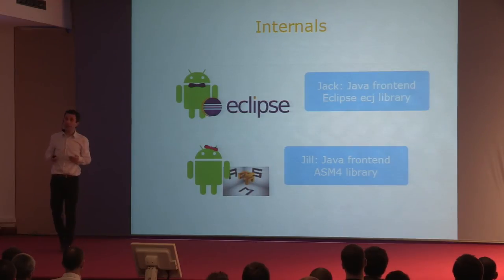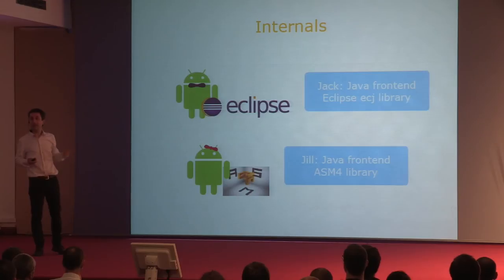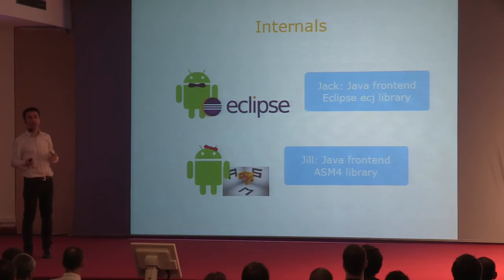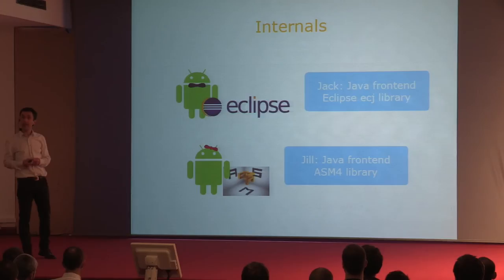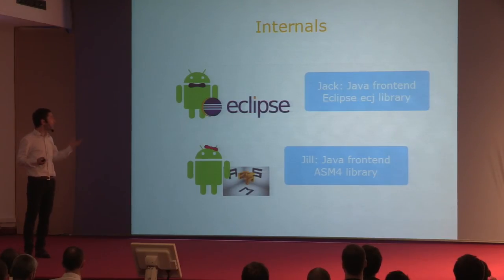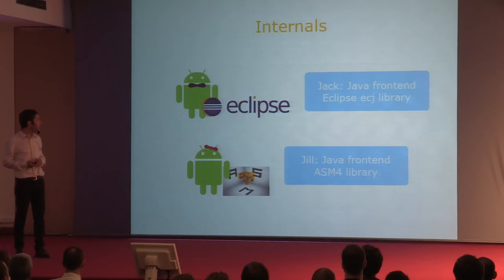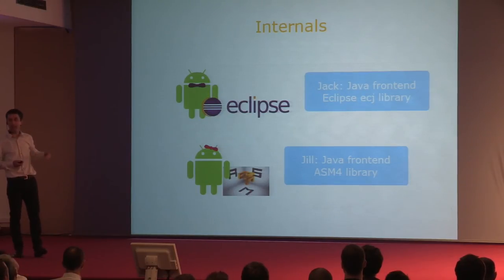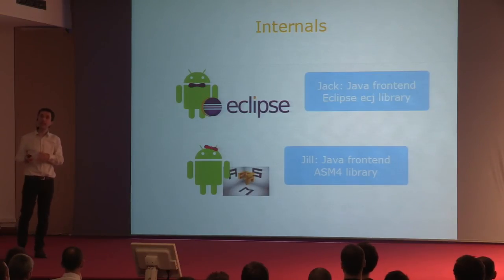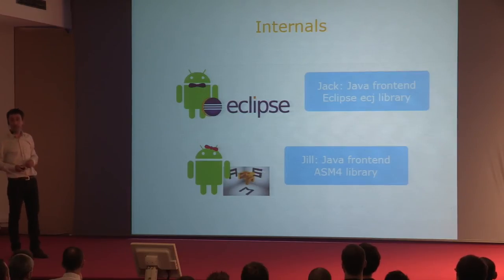Perhaps in the future, if those language developers have some weeks or months to spare, they might look into the internals of the Jack and Jill compilers, which are nice and clean implementations. They might want to replace the Java frontend in Jack—which is currently the ECJ library—or replace the Jill Java frontend, which is the ASM4 library. By replacing those libraries, in theory you could add support for different languages than Java.